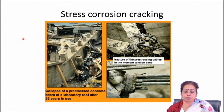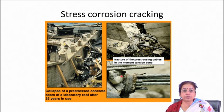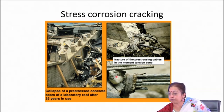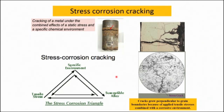Stress corrosion cracking is a very dangerous form of corrosion. On the right side, the fracture of a pre-stressed cable in the moment tension zone is shown. Where the component is subjected to any load or stress, it can fail very quickly — the kinetics of failure is much faster than in general or pitting corrosion. So, stress corrosion cracking can also lead to failure in service.